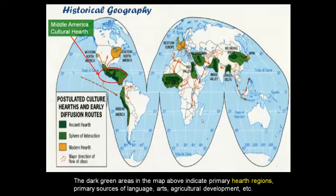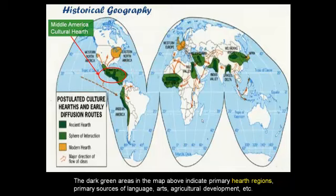For example, within Middle America and South America, we have two ancient hearths. We have the Mesoamerican hearth, which basically constitutes the Mayan Empire — you can see that in red where I have that circled. Down below, when we get to Africa and Southwest Asia and the Far East, there are other cultural hearths there.